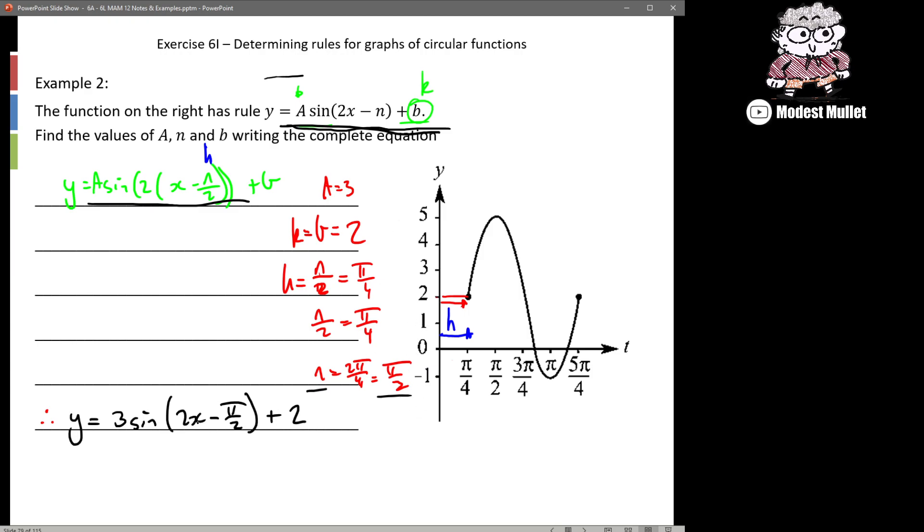You may be sitting there going, hold on why is it minus π/2 when our graph went across π/4? If we take that 2 out, we could write this as 3 sin(2(x - π/4)) + 2. And that matches what we can see in our graph, it's clearly moved across π/4.